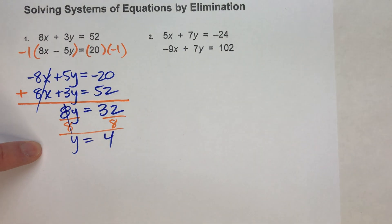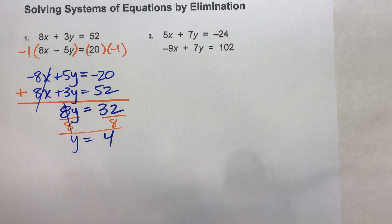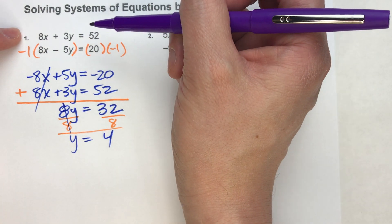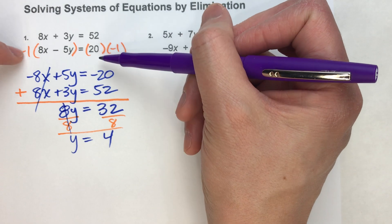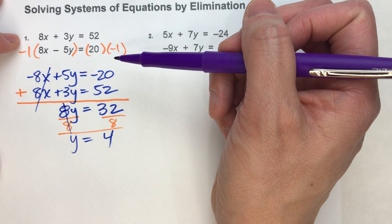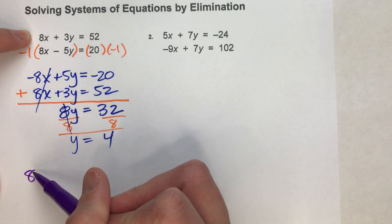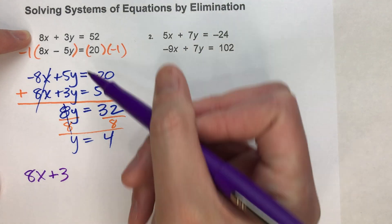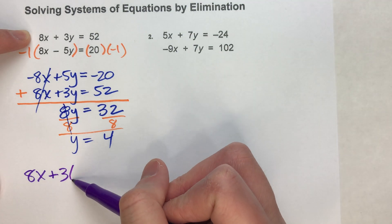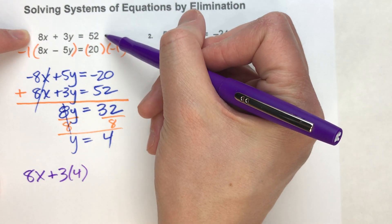So we got y. Now we still got to find x. So to find x, we're going to take our y value and put it back into the original problem. And you can choose which one you want to use. They're going to get you the same answer either way. I'm going to choose the one with all positive numbers. So I've got 8x + 3 times, instead of 3 times y, 3 times 4 equals 52.